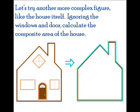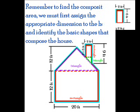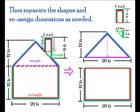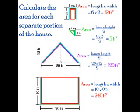Ignoring the windows and the door, calculate the composite area of the house. Remember, to find the composite area, we must first assign the appropriate dimensions to the house and identify the basic shapes that compose it. Notice the figure below — do you see the rectangles and the triangles that compose the house? Then separate the shapes and reassign the dimensions as needed. See how the separation occurs? Next, calculate the area for each separate portion of the house.